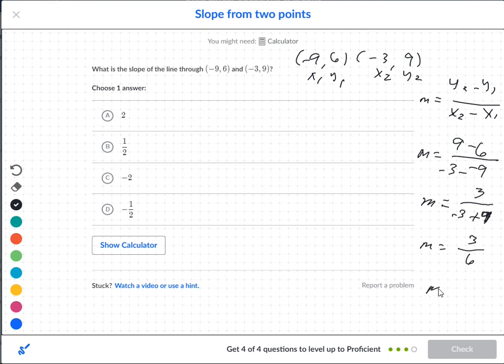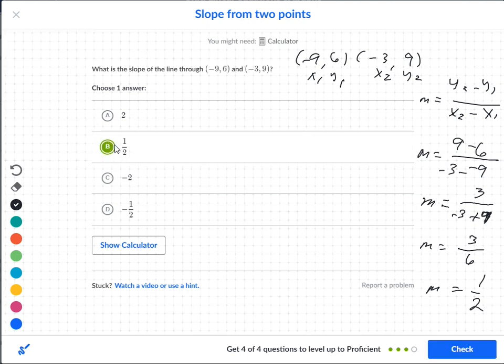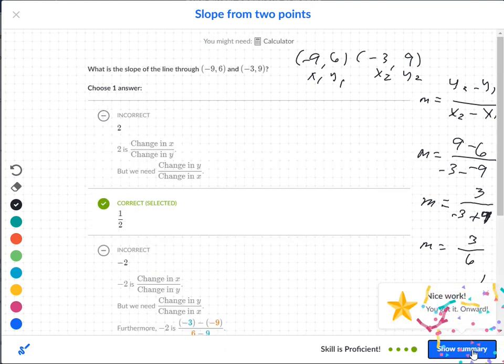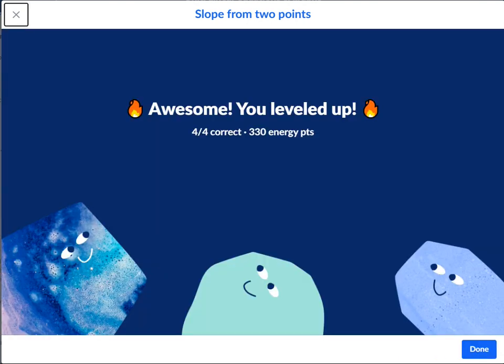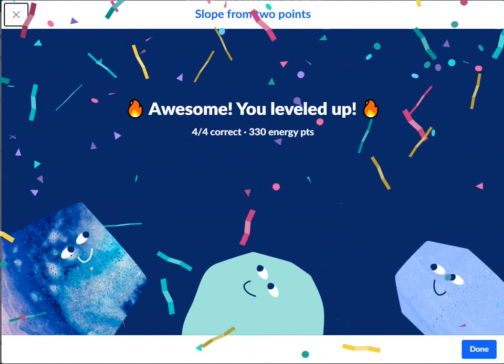Now, 3 goes in itself one time, and it will go into 6 two times. So, my answer should be 1 half. So, my answer should be 1 half.